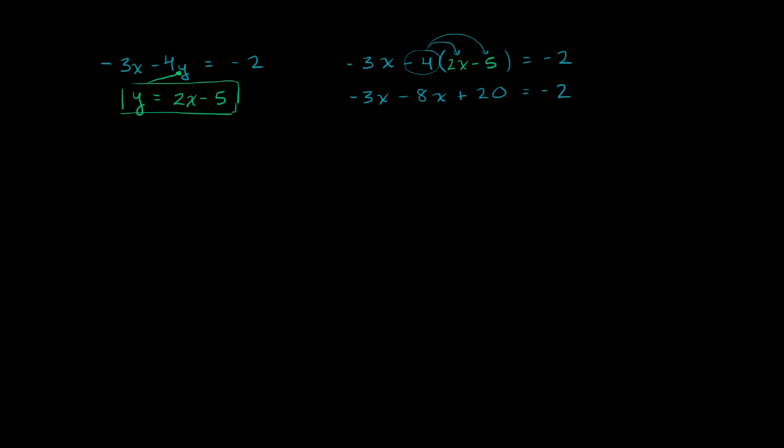And that's going to equal negative 2. And now we can combine all of the x terms. So negative 3x minus 8x, that's going to be negative 11x. And then we have plus 20, plus 20 is equal to negative 2.